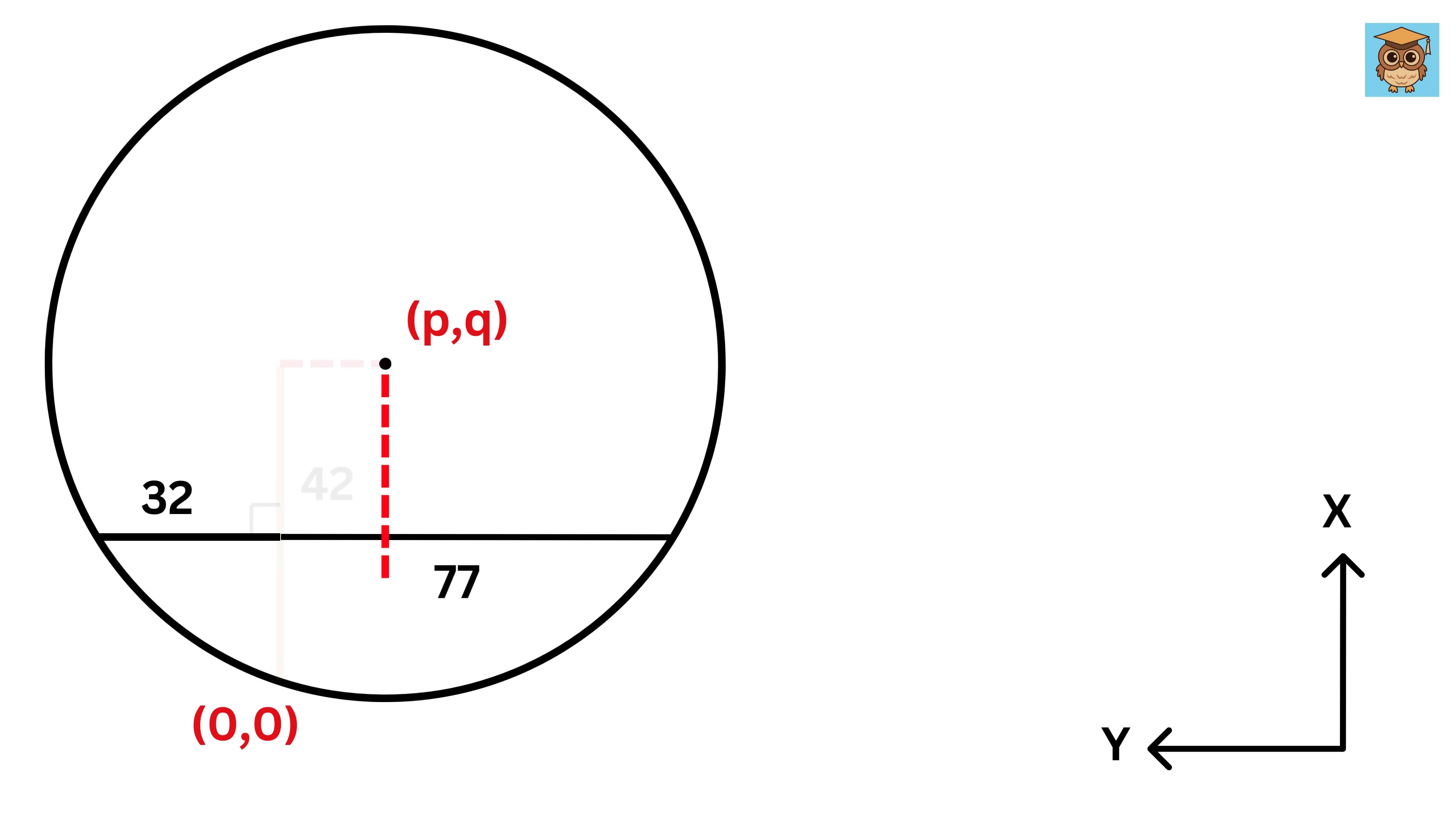Then let us draw this perpendicular bisector line from the center of this circle to this chord. It will bisect the chord like this, and this length will be equal to 77 over 2, or 38.5 units.